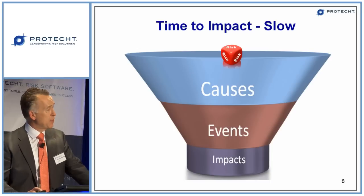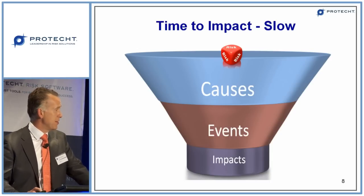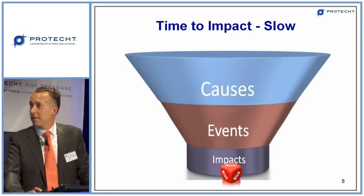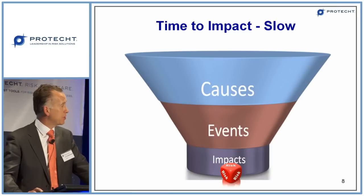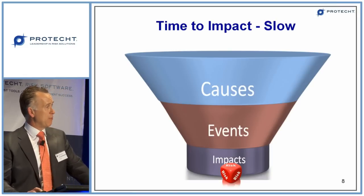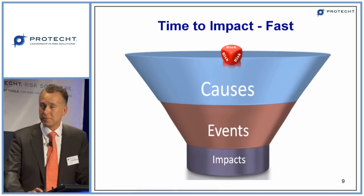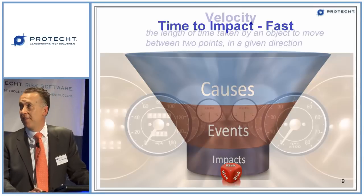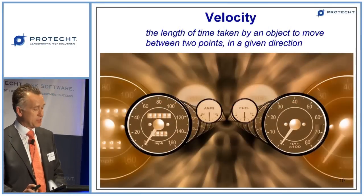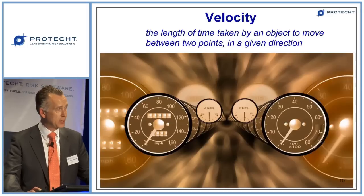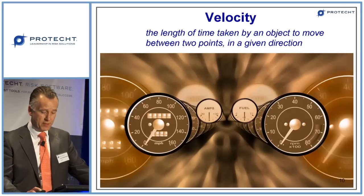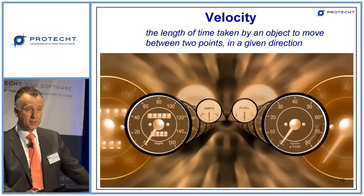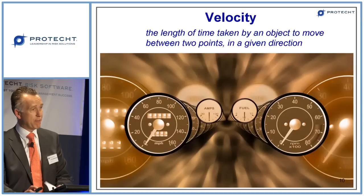The second time period is: when the cause now occurs and the risk has started, what is the time between the cause and the impact being felt? We therefore have two elements: the time between now and when the risk is next going to occur, and the time between cause and impact. It's all about the speed at which the risk travels — between now and when it first occurs, and from cause to impact. That we refer to as velocity, using the Oxford Dictionary definition: the length of time taken by an object to move between two points in a given direction.